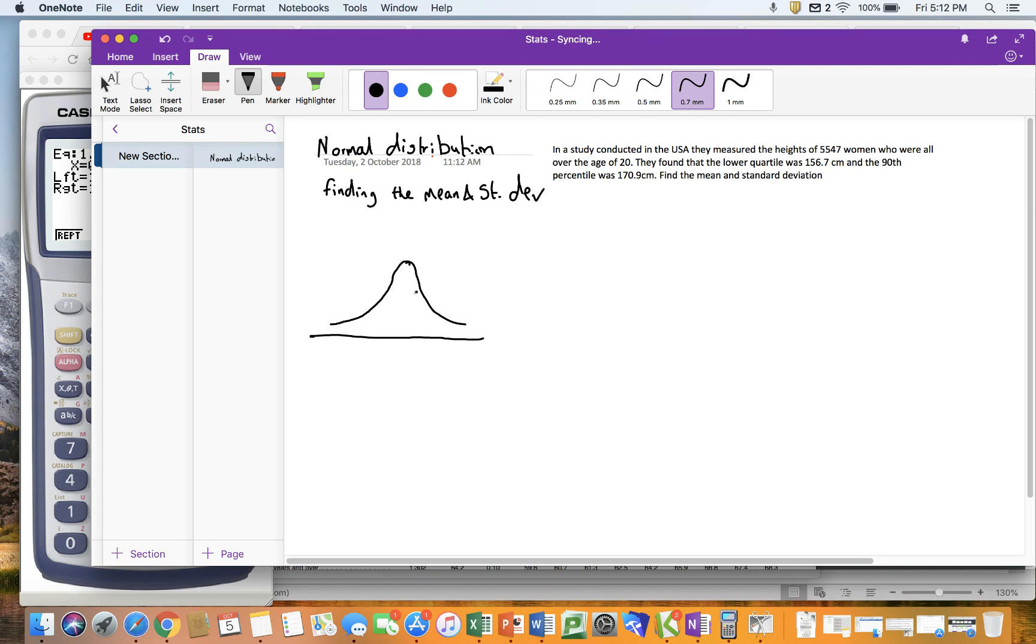I've got that the lower quartile, which is 25%, was 156.7. And I've got the 90th percentile, so I'm just going to color in this bit and say that's the 10% then, and that was 170.9.